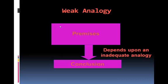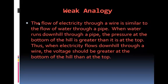A weak analogy is when there is a comparison made in the premises and the conclusion depends upon that comparison, but the analogy is inadequate. For example: the flow of electricity through a wire is similar to the flow of water through a pipe. When water runs downhill through a pipe, the pressure at the bottom of the hill is greater than at the top. Thus, when electricity flows downhill through a wire, the voltage should be greater at the bottom of the hill than at the top. That is just silly.